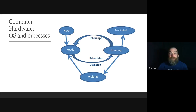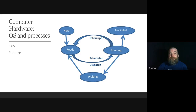We now divert from hardware to software, considering operating systems and processes. When power is first applied to the CPU, it looks for an instruction source — usually provided by BIOS, a basic input-output system, which schedules communication between components on the motherboard. The BIOS searches storage for somewhere to bootstrap the system, typically a local drive, but it could also be a USB drive or a network device.